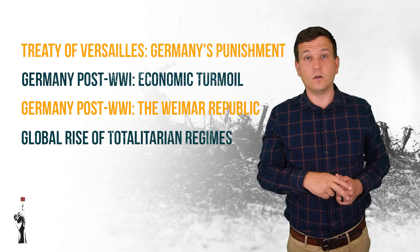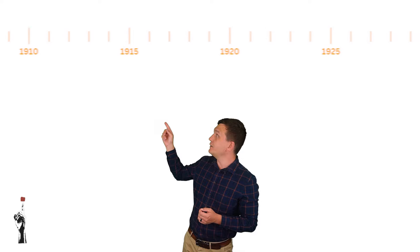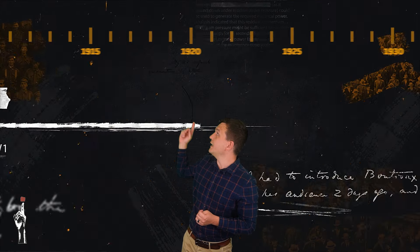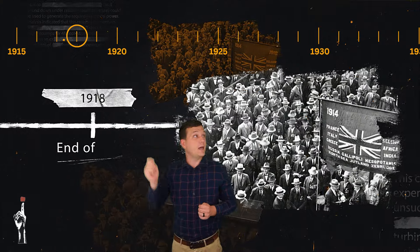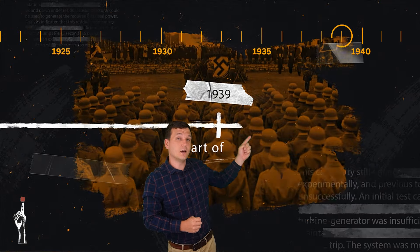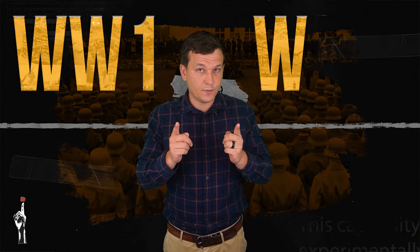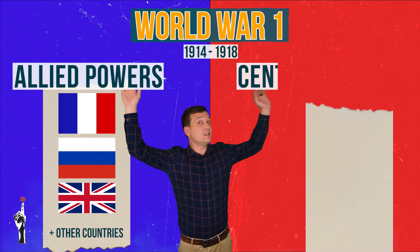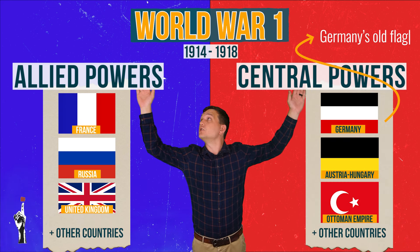If we want to discuss the causes of the Second World War we have to start with the First World War. With the timeline behind me: 1914 is the start of the First World War, it ended in 1918, and the Second World War started in 1939. Now let's look at the link between these two wars. In the First World War the Allied Powers fought against the Central Powers — have a close look at which countries fought against each other.